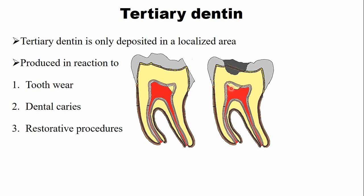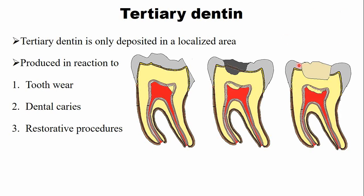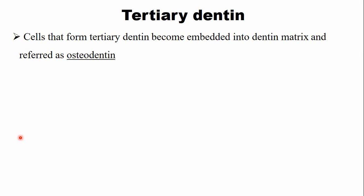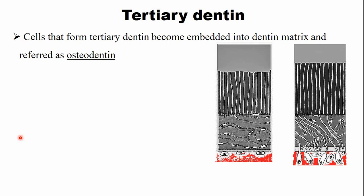Tertiary dentine also forms in response to restorative procedures such as fillings — new dentine forms just below the restoration. Overall, tertiary dentine deposition results in a reduction in the size of the pulp chamber. Sometimes the cells that form tertiary dentine become embedded into the dentine matrix; in this case it is referred to as osteodentine, giving the matrix a bone-like appearance.